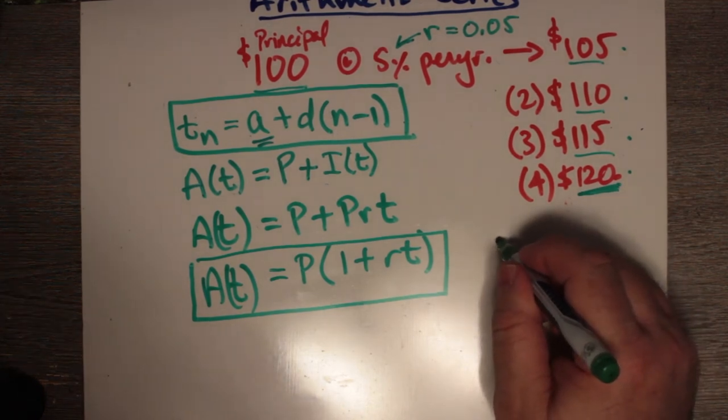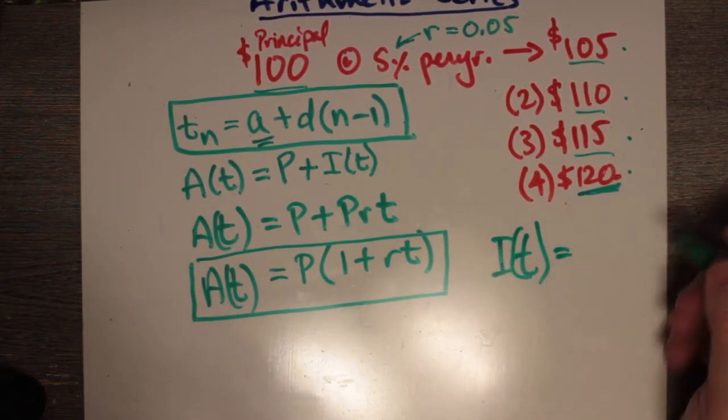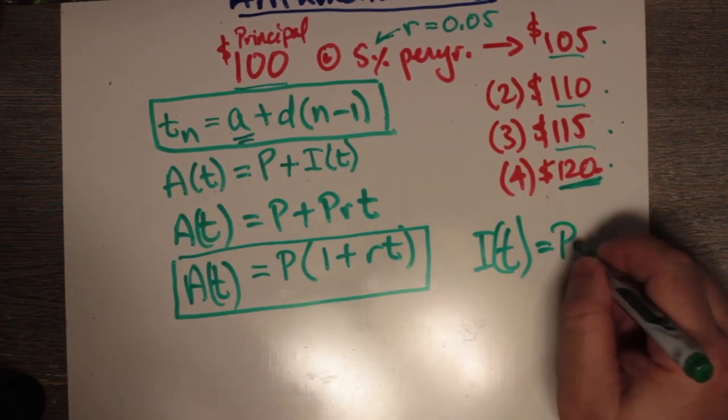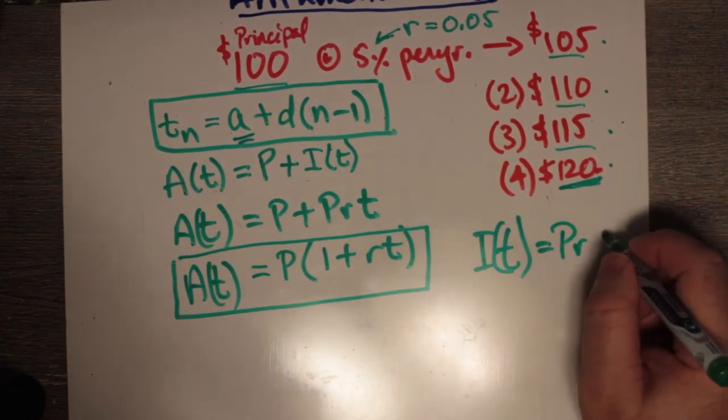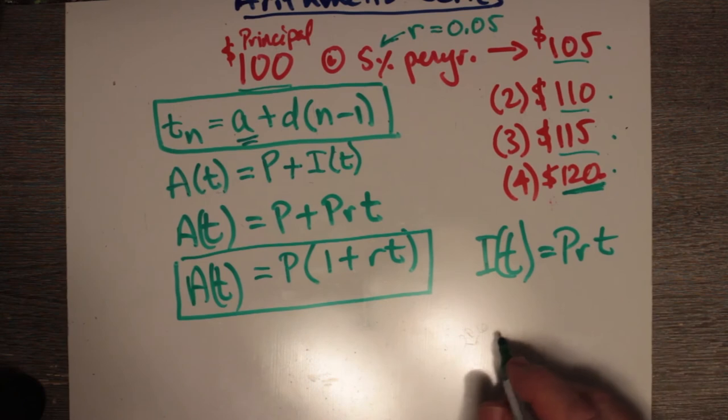And of course, I of T, which is discussed in the book quite extensively, is P times R times T. The principal multiplied by the percent interest rate times T. So,